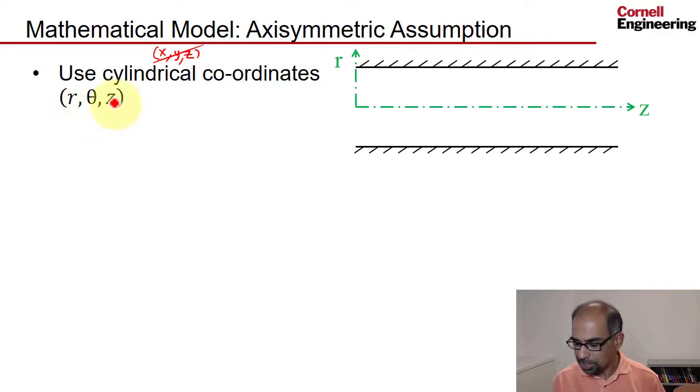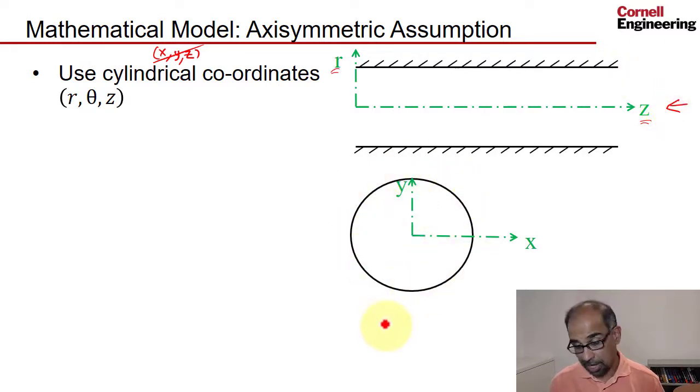To see what these are, if I go to a cross section of the pipe, this is the pipe wall, pipe wall, this is the pipe axis—that's the axial coordinate and that's the radial coordinate. If I look at the pipe along here, I'll see a circular cross section.